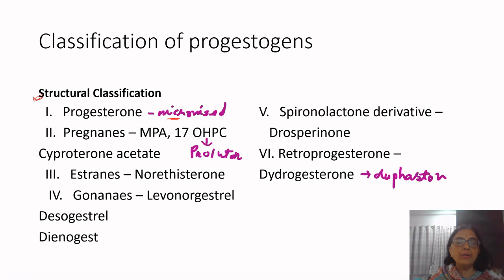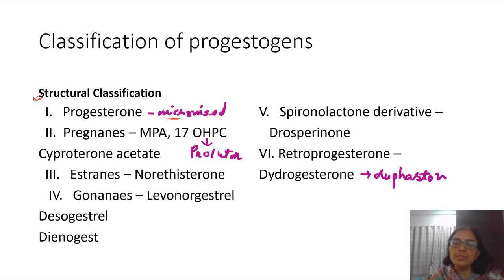Pregnanes, estranes, and gonanes are the three main groups to remember. Then you have the spironolactone derivative as a fifth group, which includes drospirenone. The retro-progesterone molecule is dydrogesterone, commonly available as Duphaston. 17-alpha hydroxyprogesterone caproate is a pregnane, used as Proluton Depot.